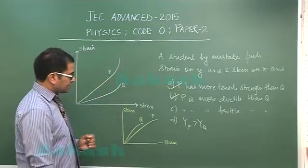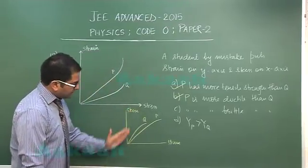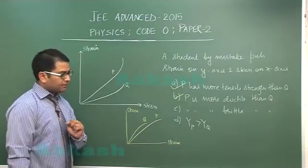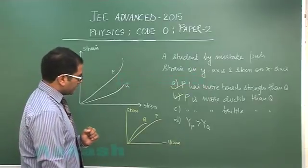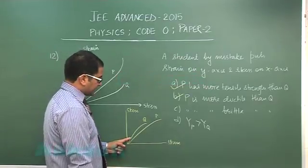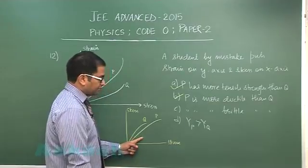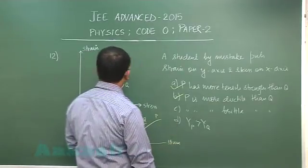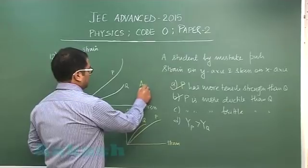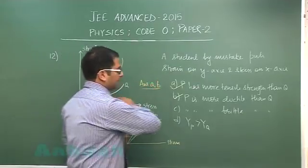Regarding Young's modulus the slope of stress strain graph would give us the Young's modulus and you could see Young's modulus of elasticity for Q is greater than that of P so D would be incorrect. So for question number 12 the correct answer would be A and B.